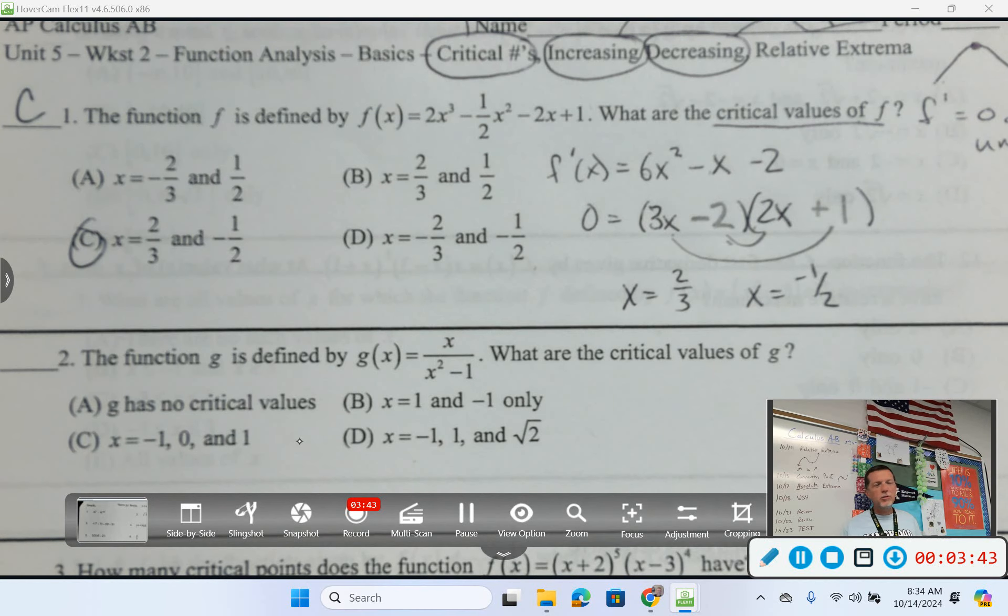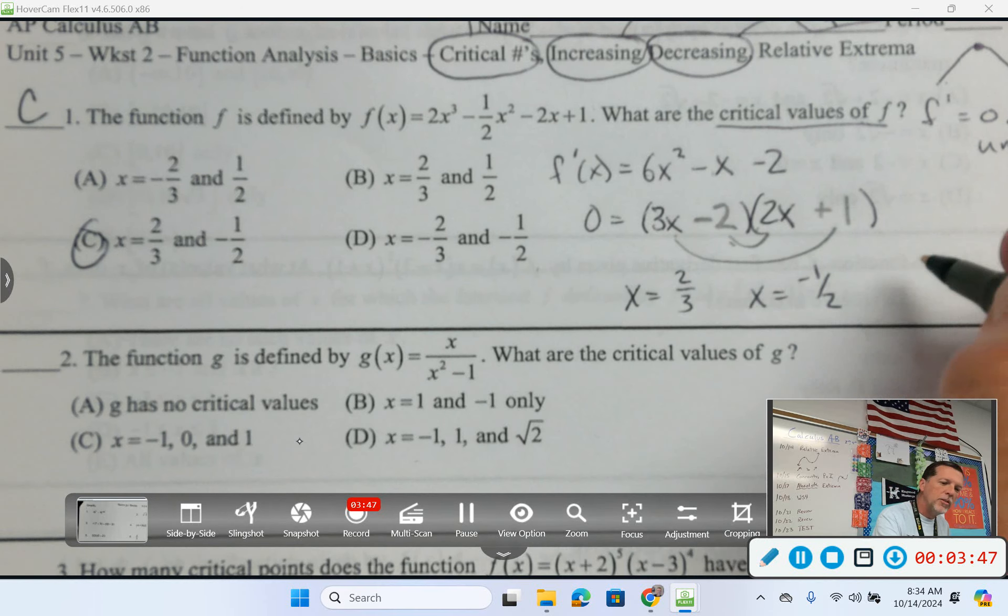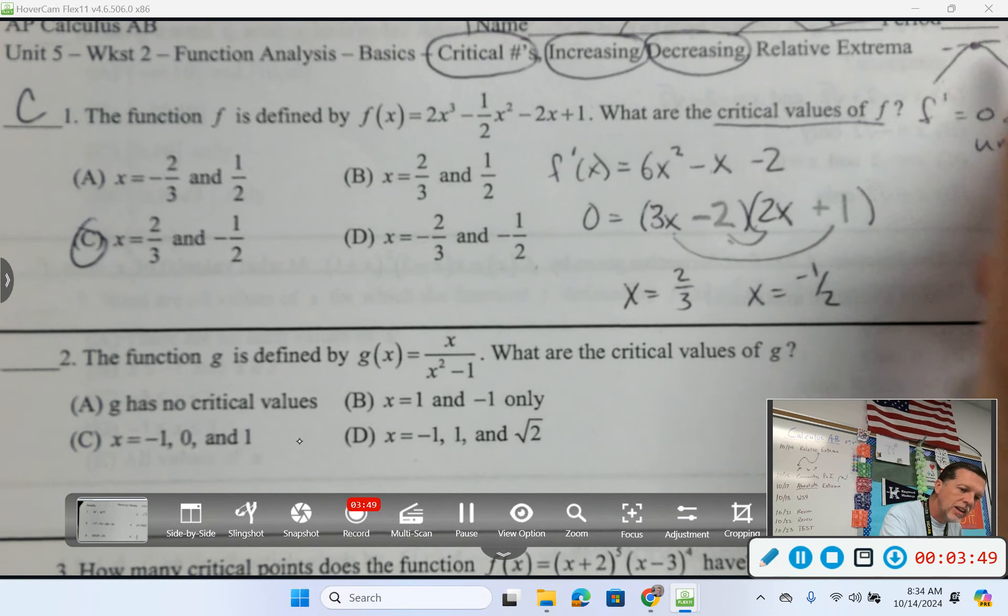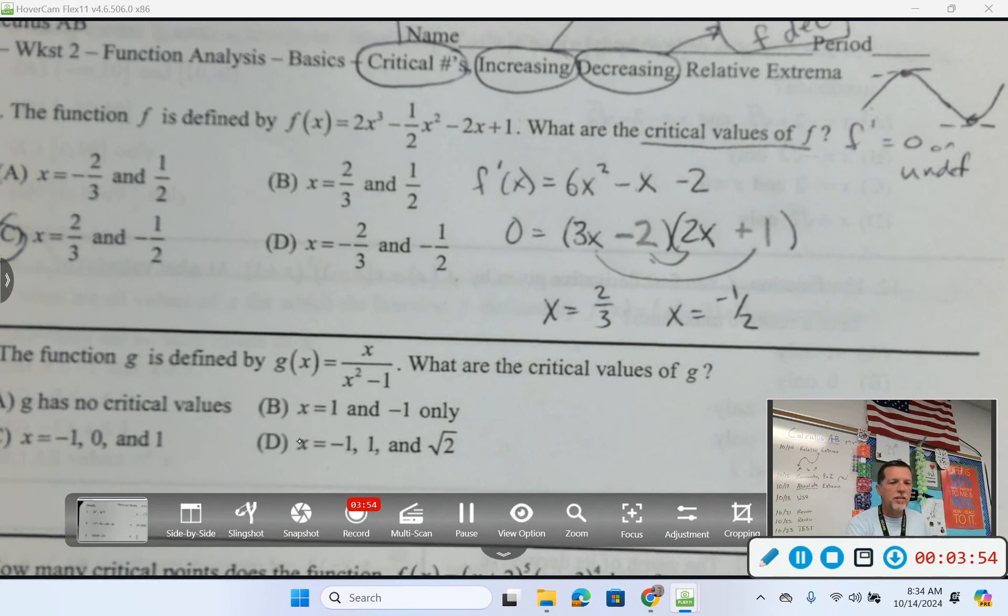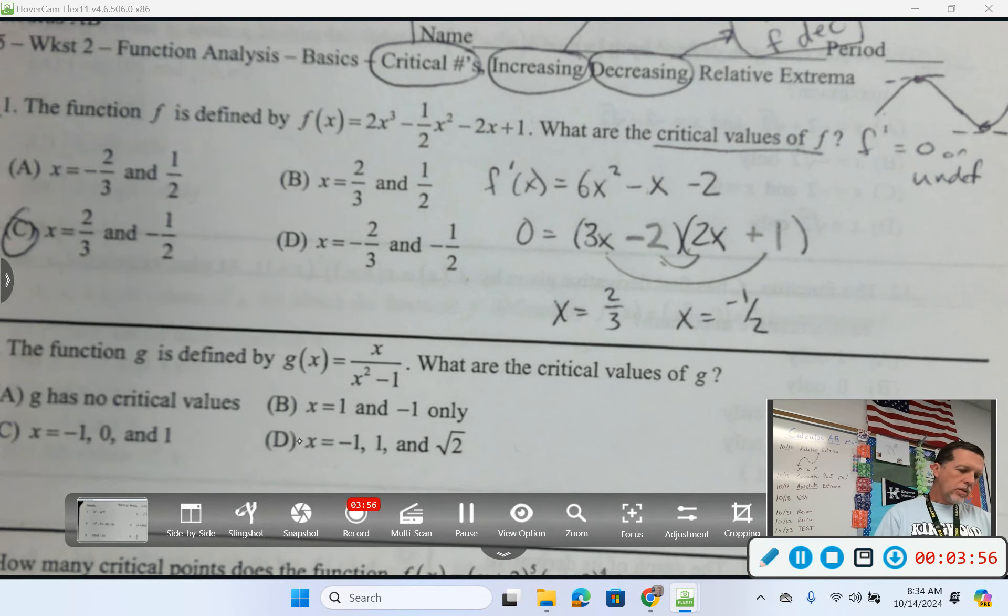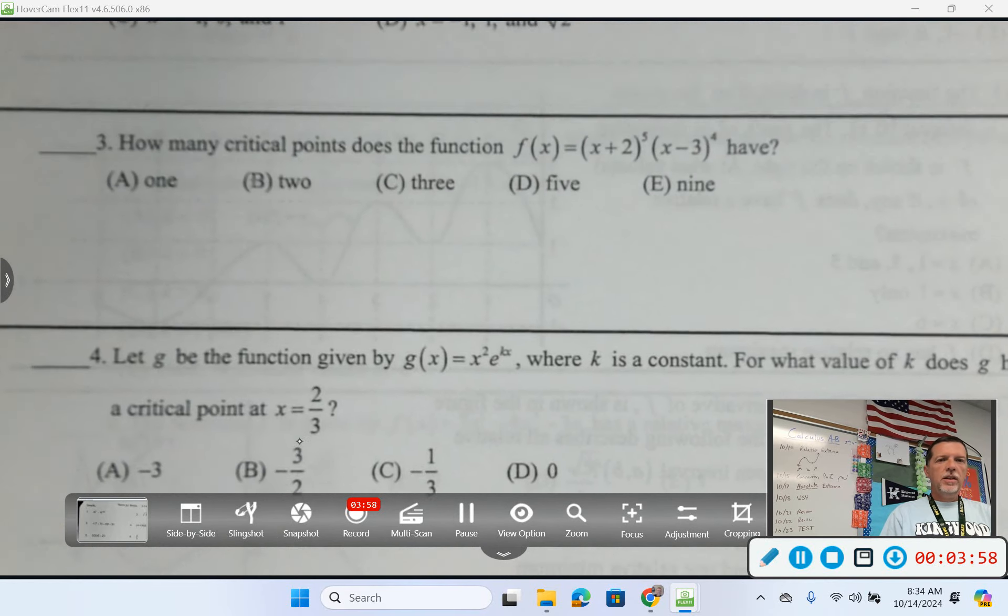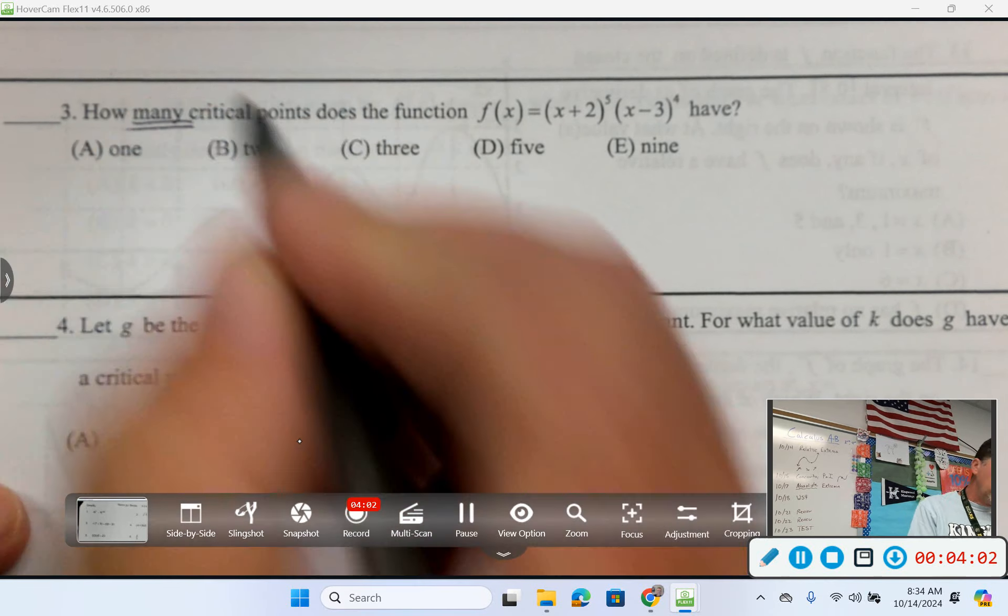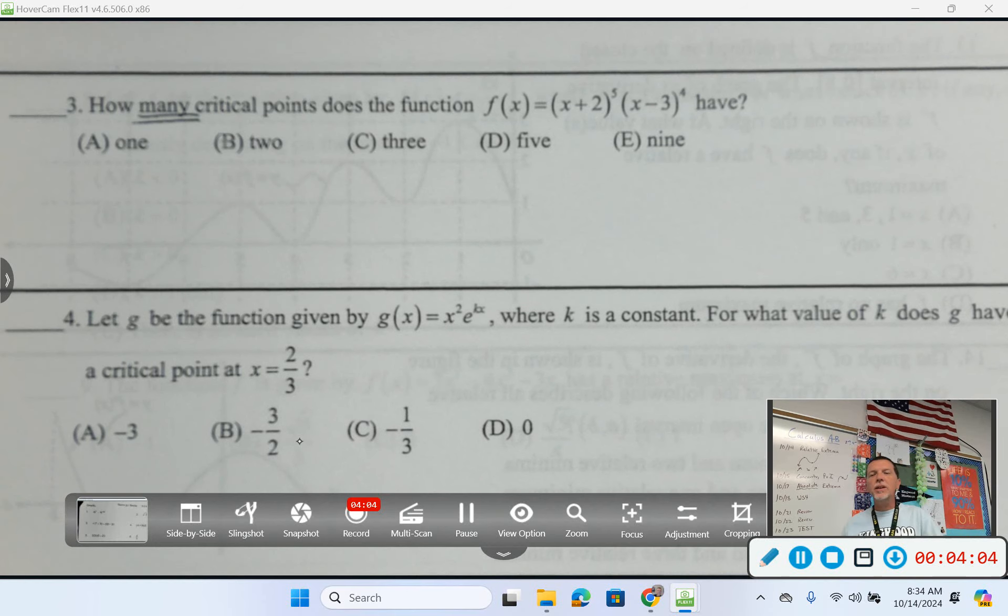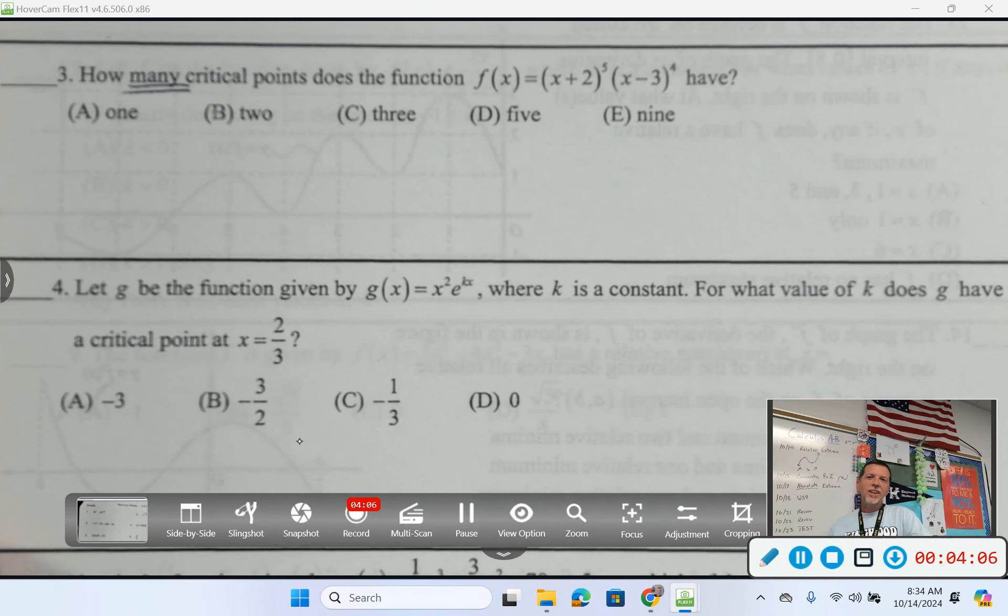And those are potential maxes and mins. We don't really know yet which one they are or how to figure that out, but if f prime is zero, then slope is zero, so we might have a max or min at those spots. Number 3, how many, so I don't have to find them, well, I guess I sort of have to find them. How many critical points does that function have?